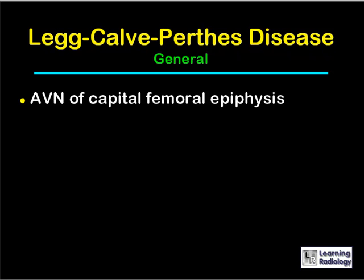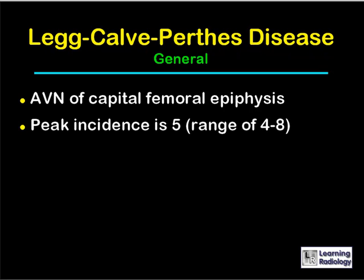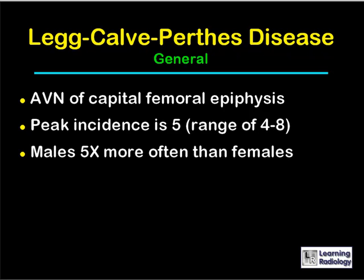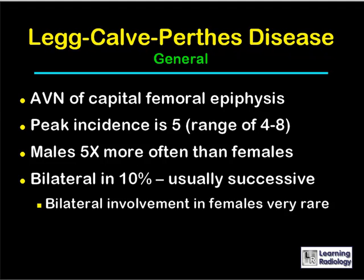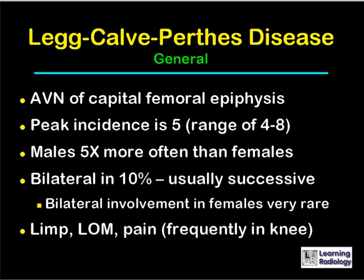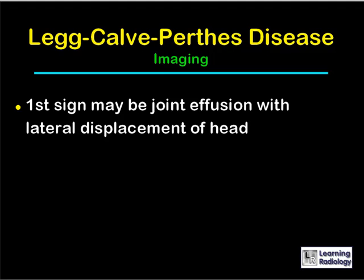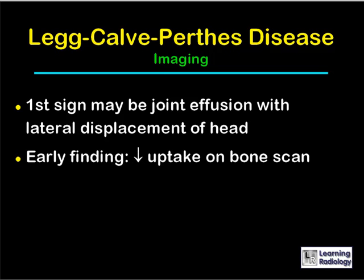Legg-Calvé-Perthes disease is essentially avascular necrosis of the capital femoral epiphysis. Its peak incidence is five years of age, with a range of about four to eight. Males are five times more often involved than females, and it is bilateral in about 10% of cases, usually one hip after the other rather than simultaneously. Clinical findings include a limp, limitation of range of motion, and pain, which can frequently be referred to the knee. An early sign may be a joint effusion producing lateral displacement of the head, and decreased uptake on bone scan reflects the avascular nature of the disease.